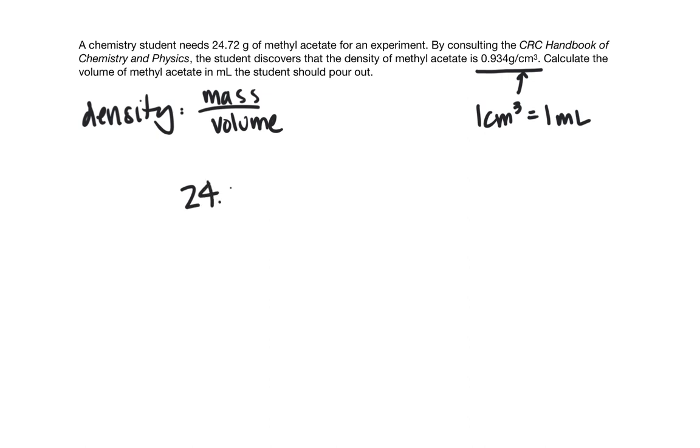We have 24.72 grams of methyl acetate. We're going to multiply it by the inverse of the density, which means we divide. Put this on the bottom: 0.934 grams in one milliliter. When we plug this into our calculator, you should get 26.5 milliliters.